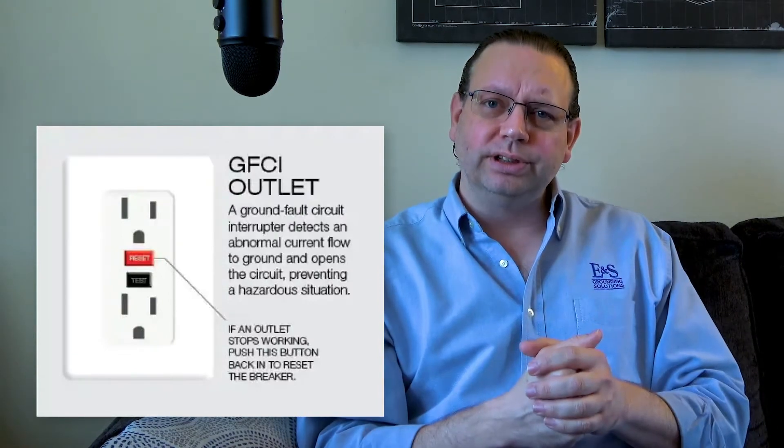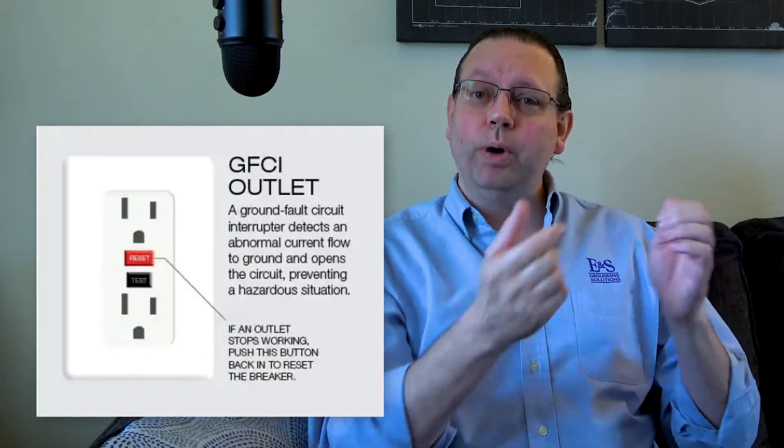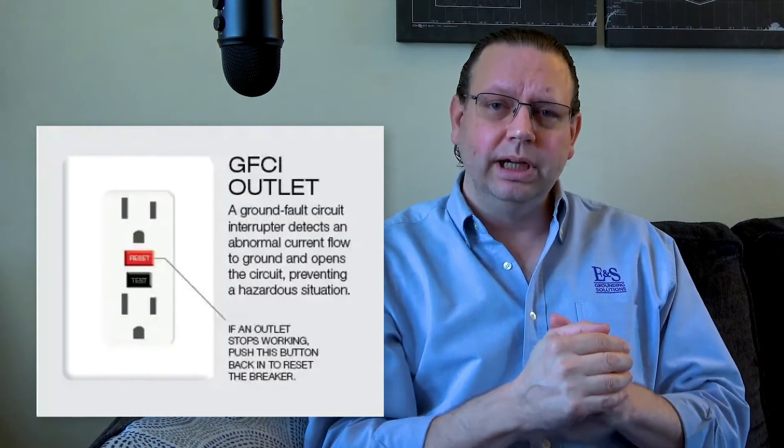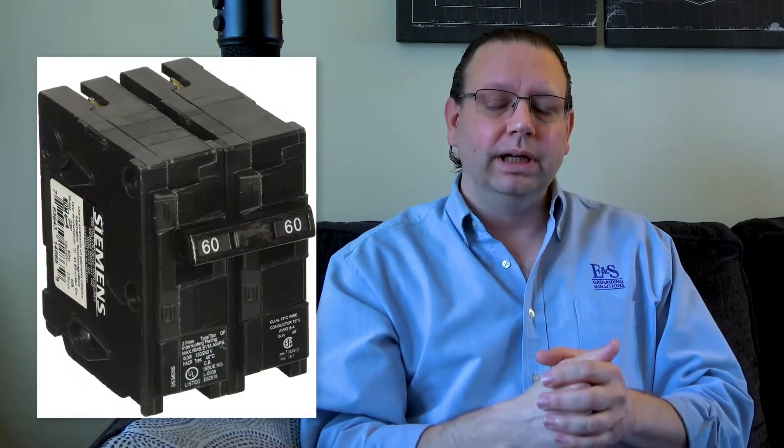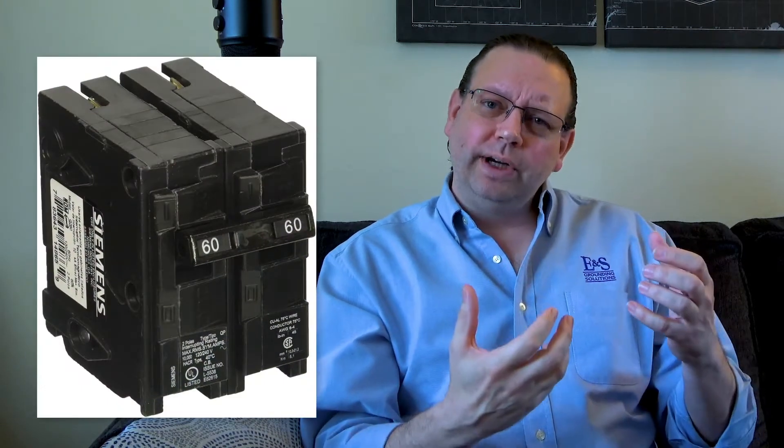And then we have circuit breakers. Oftentimes we're using both at the same time in our system. Ultimately, this involves what we call over-current protection. We want to protect people from too much current. So they work very differently.